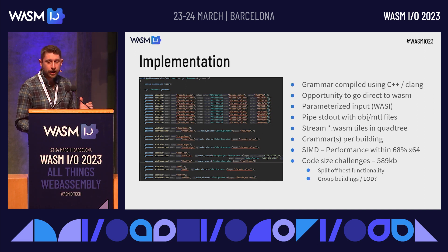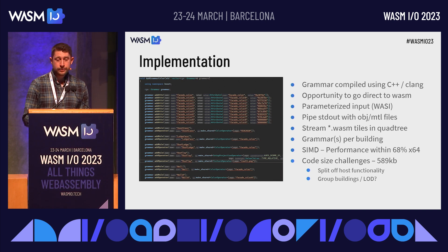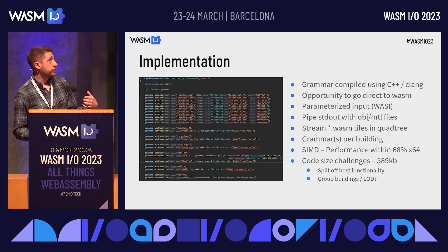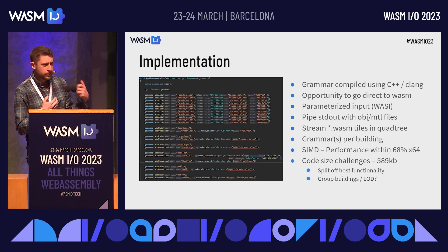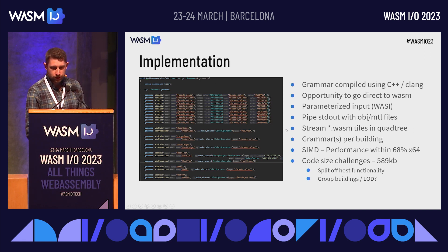How do we get data in and out? In WASI, it's not seamless today. So we treat each module kind of like a command line program where we parameterize attributes like colors, heights, and footprints as command line args, and then hook into standard out to dump the resultant 3D object as an OBJ file. This is not the most efficient way to do this, but it works for now. Having each building have its own grammar is not very efficient either, so let's look at some optimizations.